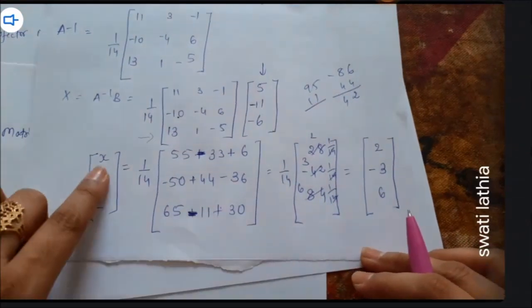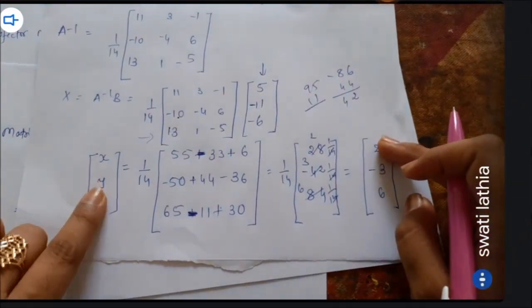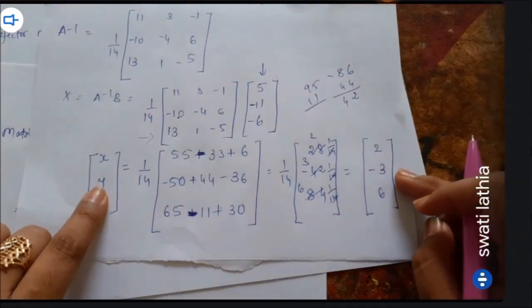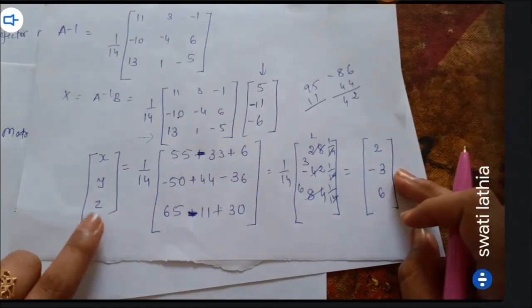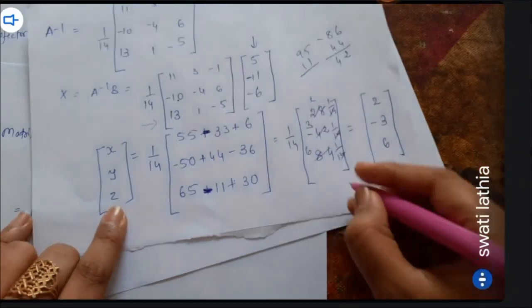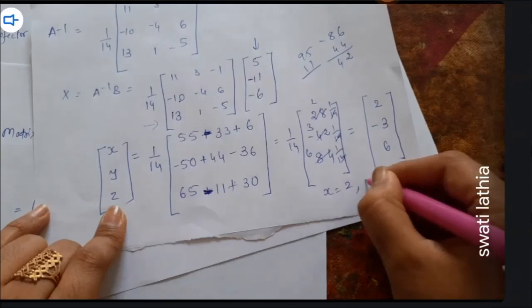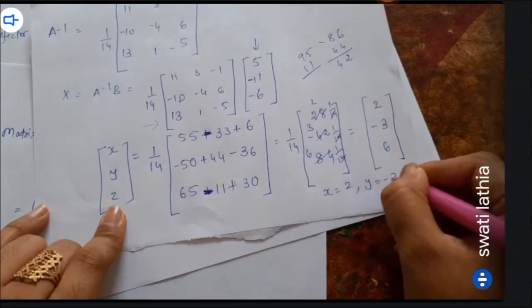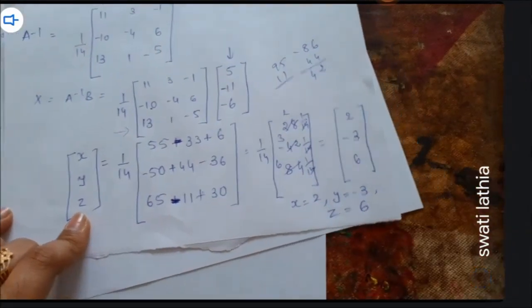Therefore x is equal to 2, y is equal to minus 3, and z is equal to 6. So x = 2, y = −3, z = 6.